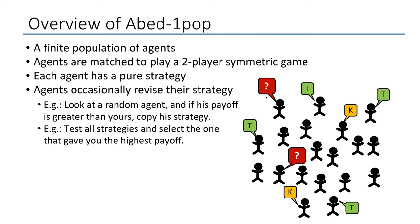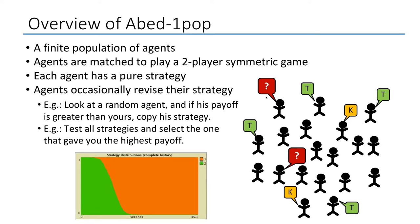We're interested in studying the behavior of this population of agents as time goes by. That is, given a certain revision protocol, will people tend to transfer money to their peers and create a cooperative and wealthy environment? Or will agents tend to keep their money for themselves, wasting the opportunity of doubling money through transfers?